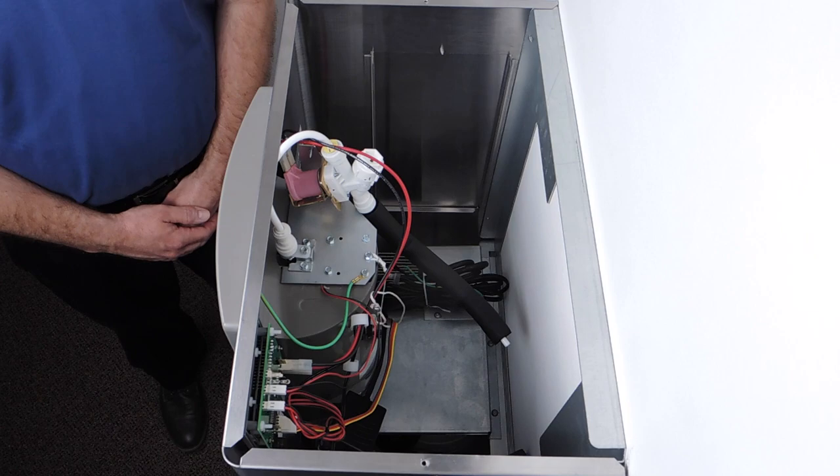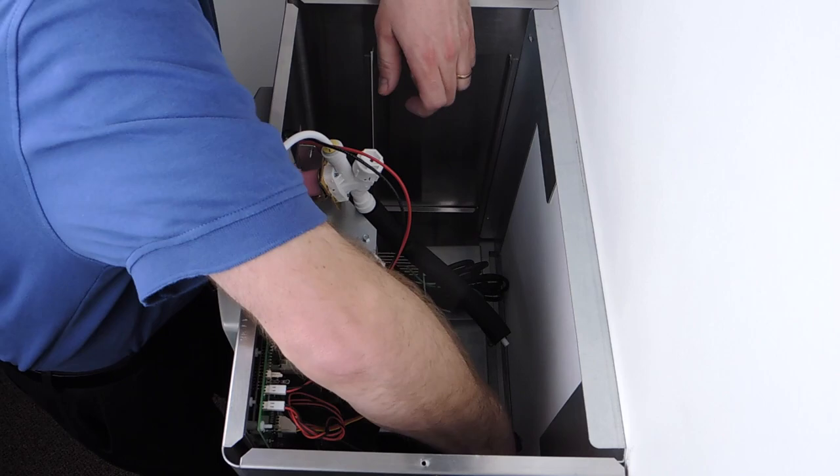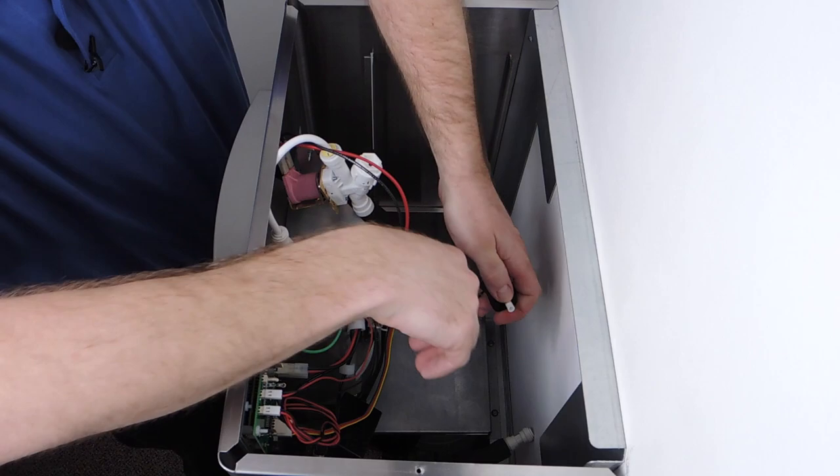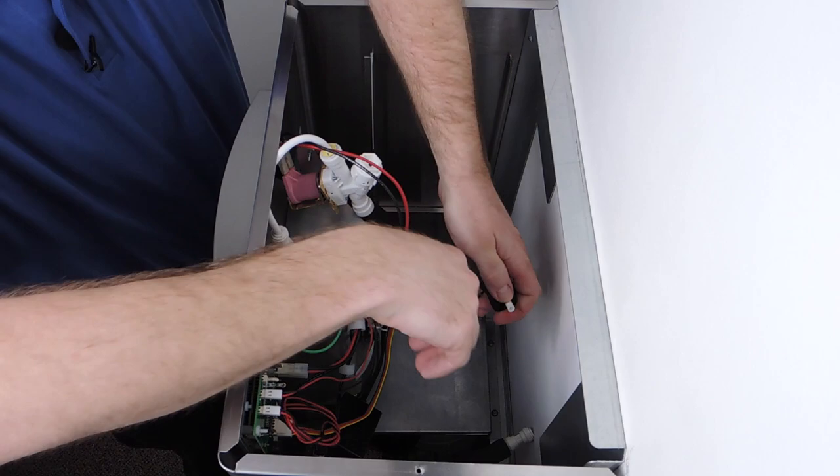And now it's time to connect the water supply from the drinking fountain to the bottle filler. Insert the tubing from the drinking fountain into the fitting. Pull out to lock in. Next, insert the tubing from the bottle filler and again pull out to lock in.